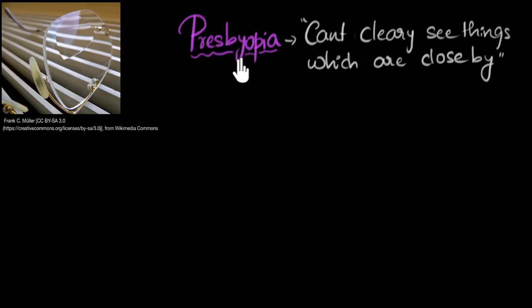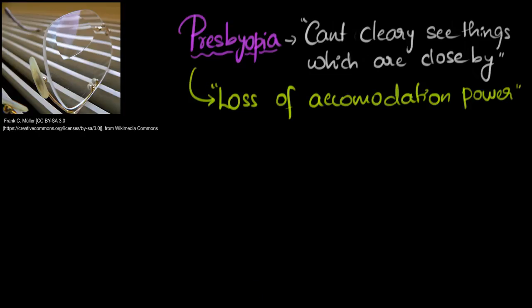So, the cause for presbyopia is the loss of accommodation power. So, let's explore this in detail now. First, let's recall what accommodation is.